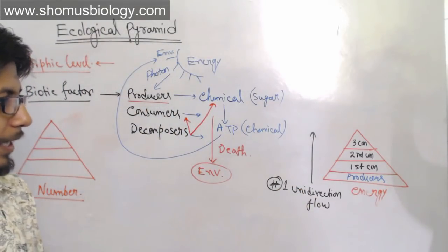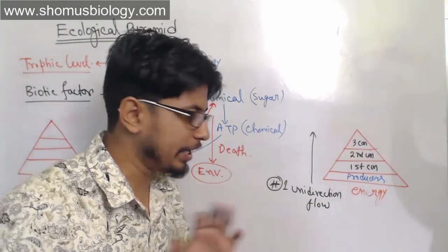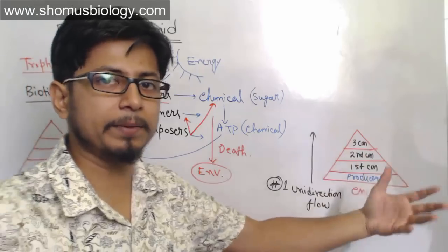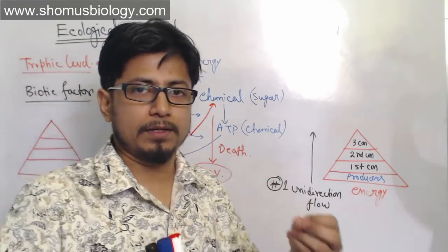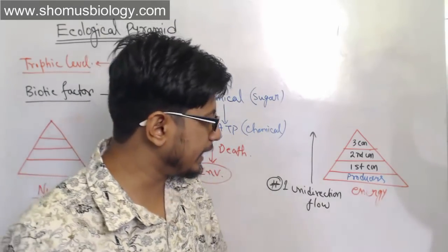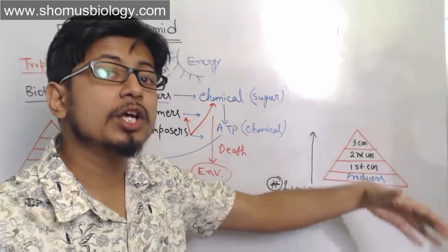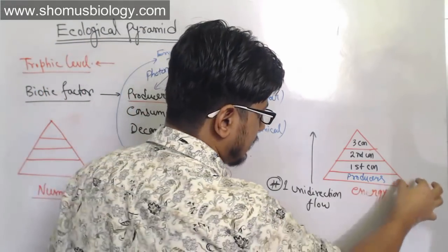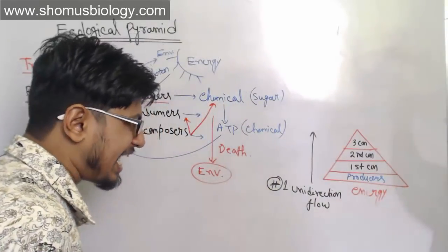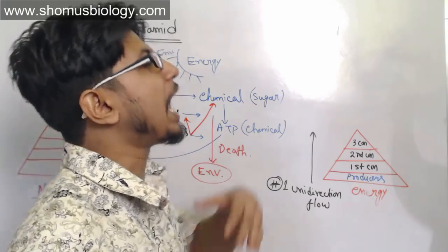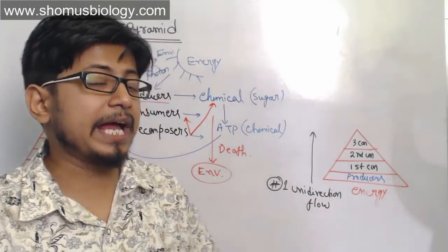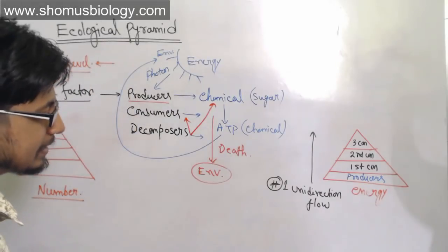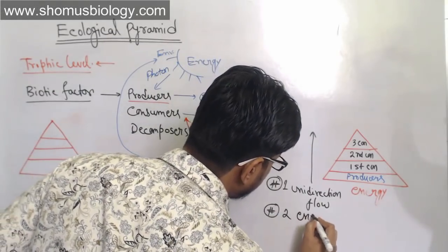Rule number one: energy flow will be unidirectional — it will never go backward. The maximum energy is at the producer level, and when producers transfer energy to the primary consumer, there is a loss of 90%. Only 10% of the energy received by producers is transferred to the next trophic level. As energy moves from one trophic level to the next, 90% is lost as heat and other energy waste. This is the second important rule: energy loss.